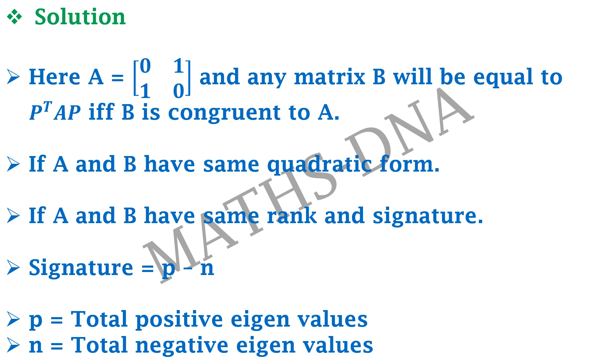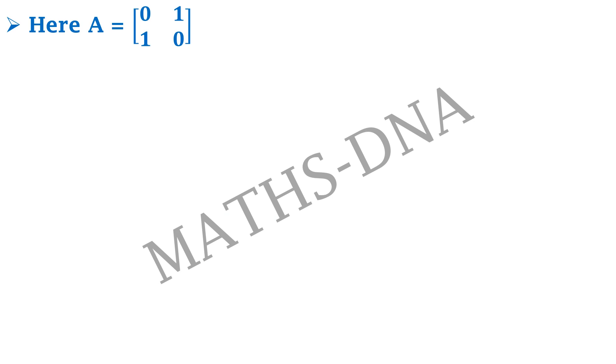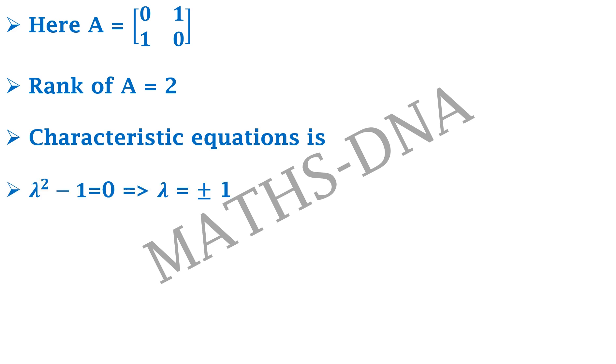Now let us solve the question further. The given matrix A equals to 0 1 1 0. Here clearly you can observe that the rank of the matrix is 2. And the characteristic equation is lambda square minus 1 equals to 0 which gives us the value of 2 eigenvalues that is plus minus 1. One eigenvalue is positive and another is negative which gives us signature of matrix A that will be equals to 1 minus 1 and that will be equals to 0.